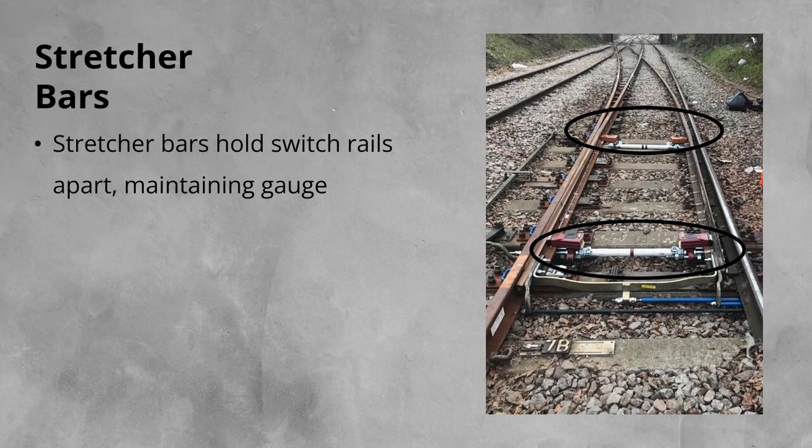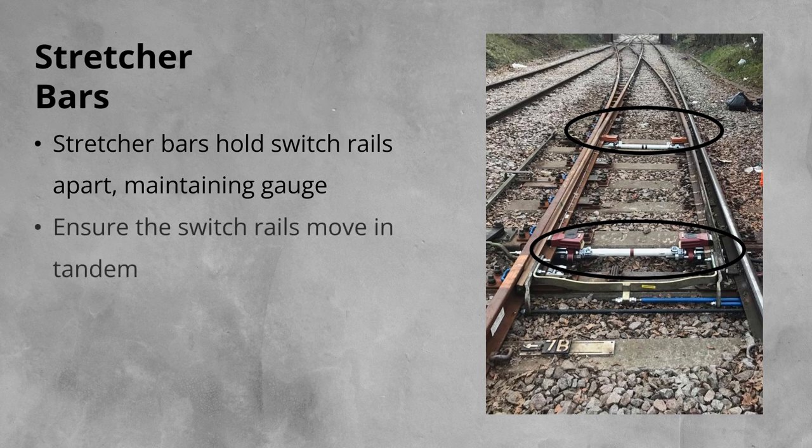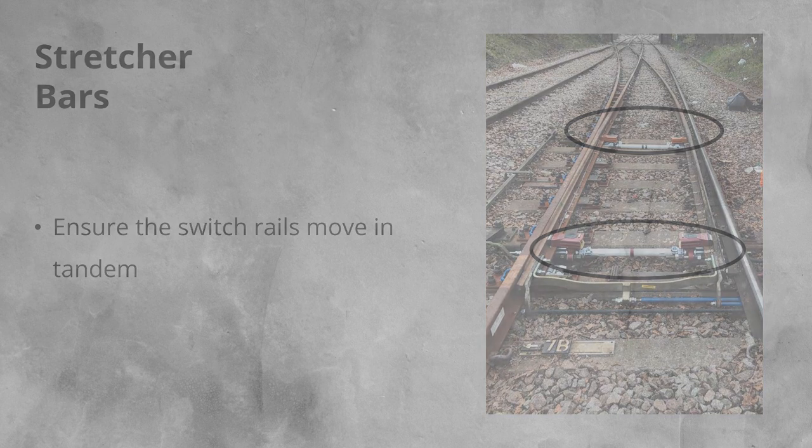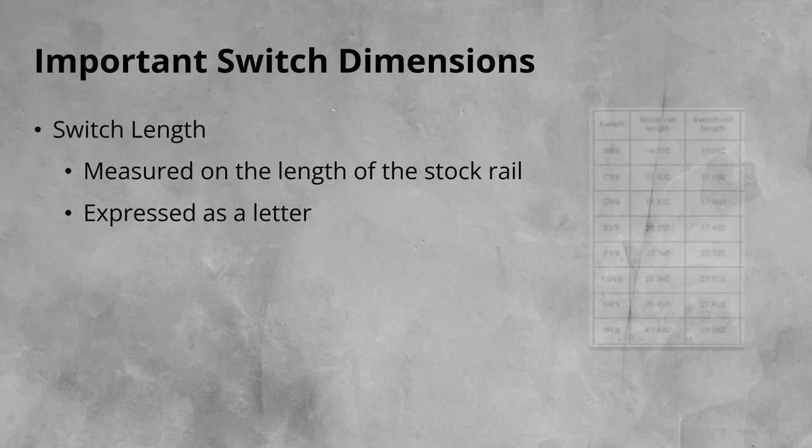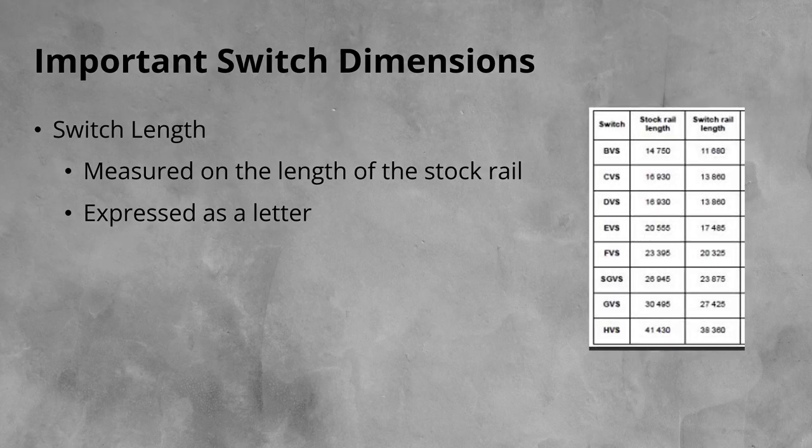There are two dimensions that are important when it comes to switches, these are the switch length and the radius. The length of the switch is measured from the end of the stock rail at the front of the switch to where the switch panel ends after the heel blocks.